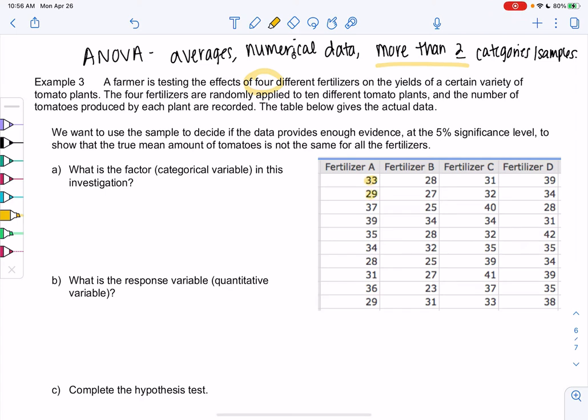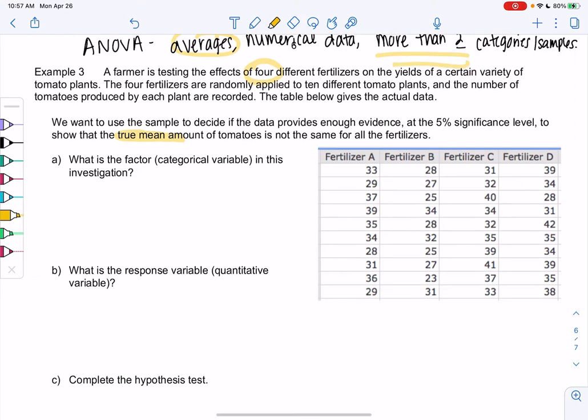So fertilizer A, one had 33, one had 29. These are the number of tomatoes. And so on. So we have four different fertilizers. So now we want to use the sample to decide if the data provides enough evidence at 5% to show that the true mean, so again that's a hint that we're in mean land, is not the same for all the fertilizers. So we're in mean land but we have four groups. So we're going to jump to ANOVA.